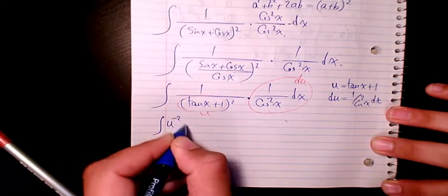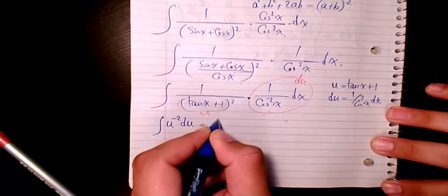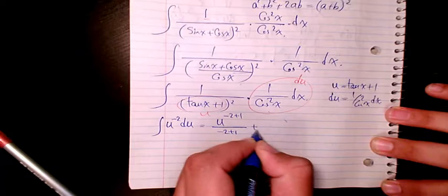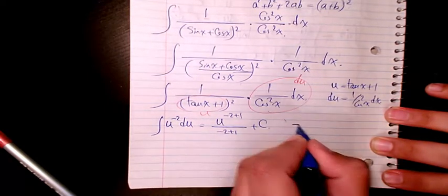Then it's going to be u to the power of negative 2 plus 1 divided by negative 2 plus 1 plus C. So then it changes to negative 1 over u plus C.